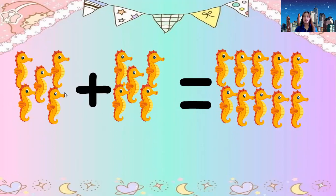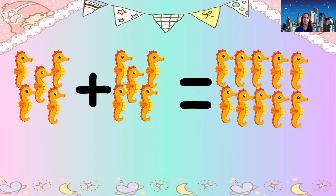What is this? It's a seahorse. Let's add the seahorses: one, two, three, four, five — one, two, three, four, five seahorses — six, seven, eight, nine, ten seahorses. Read again, everyone: five seahorses plus five seahorses equals ten seahorses. Very good.